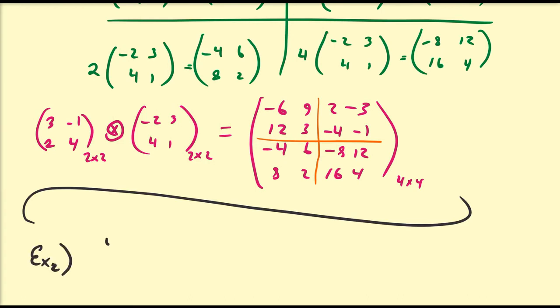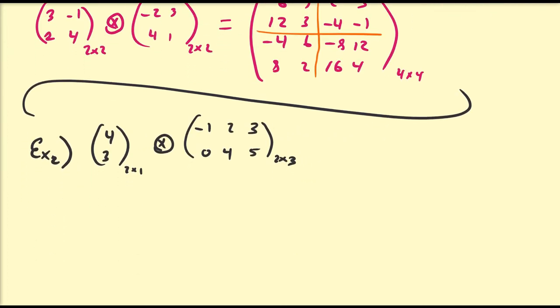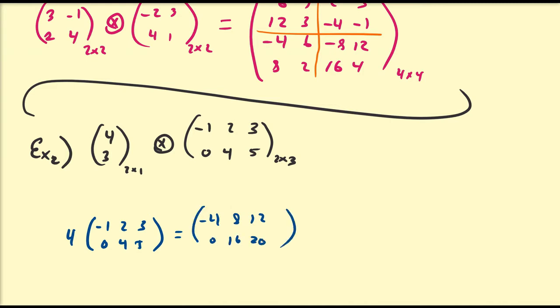Let's do another example. We want the Kronecker product of the matrix [4, 3], which is 2×1, with the matrix [−1, 2, 3, 0, 4, 5], which is 2×3. Notice we have no restrictions on dimensions — unlike normal matrix multiplication. Starting with 4: 4 times [−1, 2, 3, 0, 4, 5] = [−4, 8, 12, 0, 16, 20]. And 3 times [−1, 2, 3, 0, 4, 5] = [−3, 6, 9, 0, 12, 15].